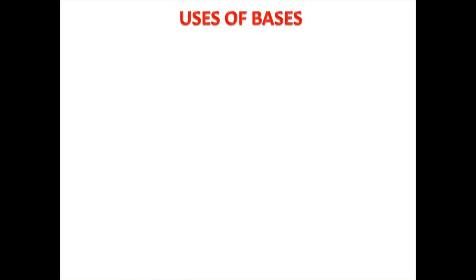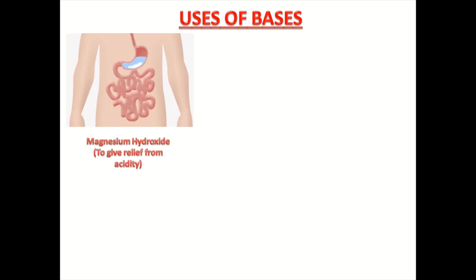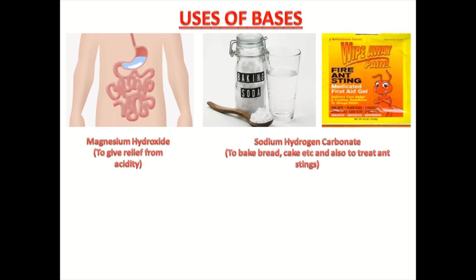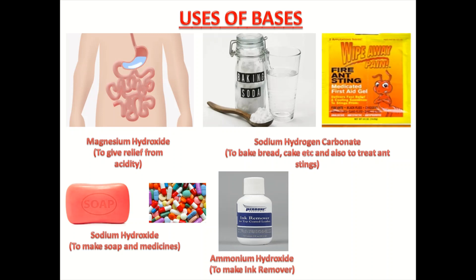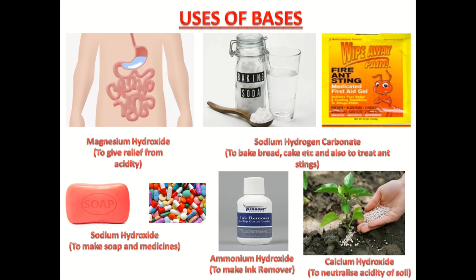Let us see the uses of bases. Magnesium hydroxide is used to give relief from acidity. Sodium hydrogen carbonate is used in baking soda to bake bread, cake, etc., and also to treat ant stings. Sodium hydroxide is used to make soap and medicines. Ammonium hydroxide is used to make ink remover. Calcium hydroxide is used to neutralize acidity of soil.